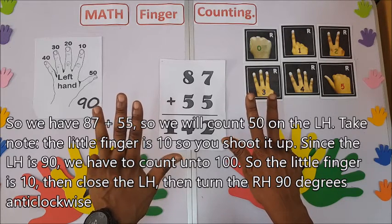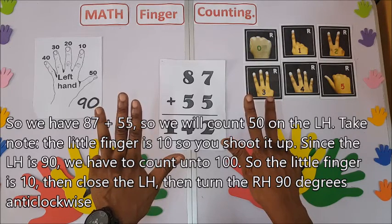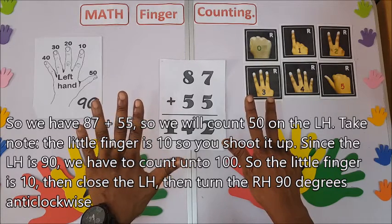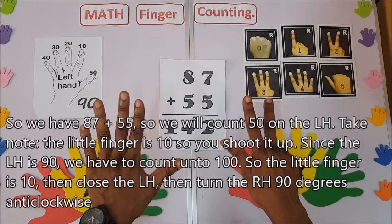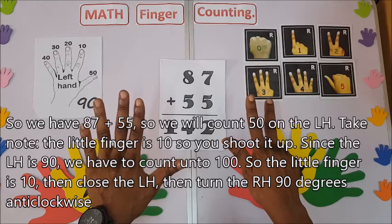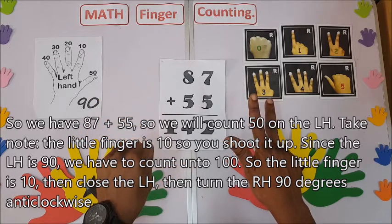Take note: the little finger is 10, so you shoot it up. Since here is 90, that means we have to count onto 100. So we have 10, the little finger is 10, then you close here.